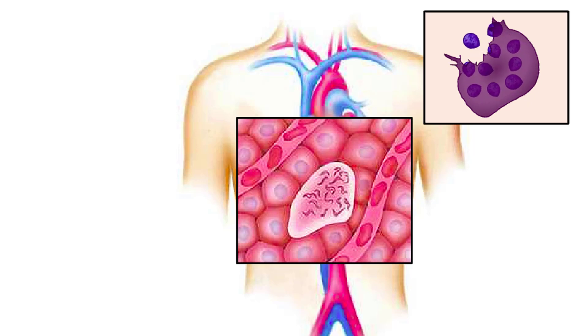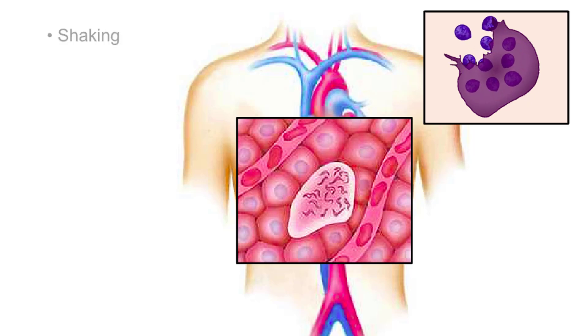This causes the symptoms of active malaria: shaking, chills, and fever. The released merozoites infect more liver and blood cells, continuing the infection.